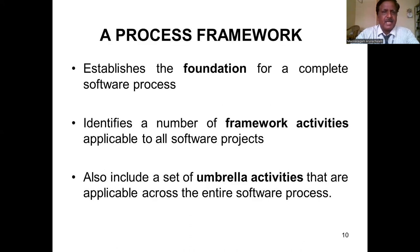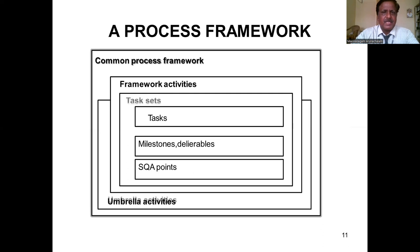A process framework establishes the foundation for a complete software process. It identifies framework activities applicable to all software projects and includes umbrella activities applicable across the entire software process. The framework consists of framework activities and umbrella activities, under which tasks are defined along with methods, tools, and software quality assurance points.